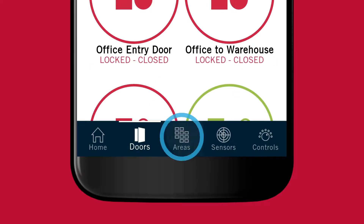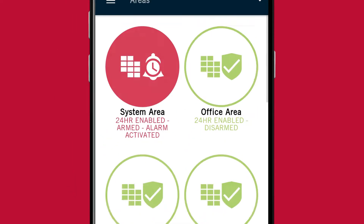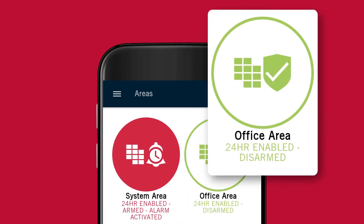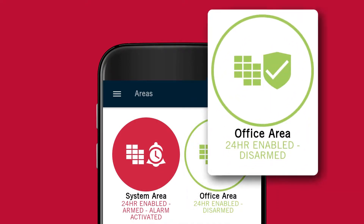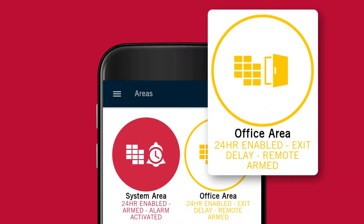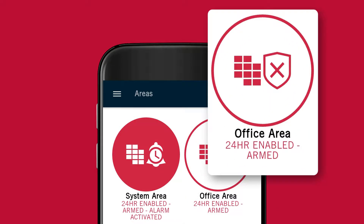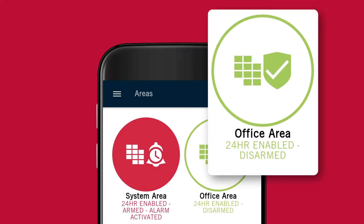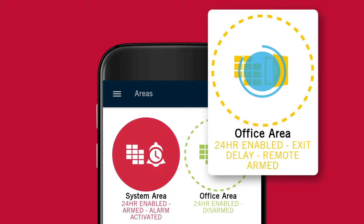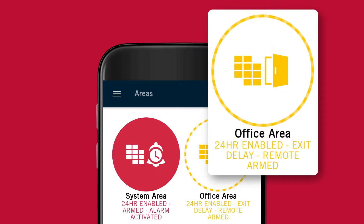From the areas tab, tap the records to arm and disarm them. If the programming allows, you can force arm an area by holding down the record for a few extra seconds.